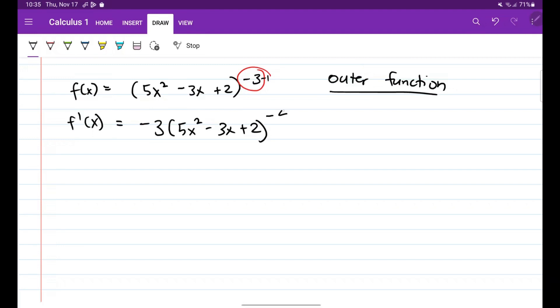Times derivative natin yung susunod, yung outer function na hindi kasama yung una natin na function. So in this case, magiging yung inner function na to, 5x squared minus 3x plus 2.